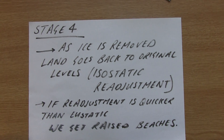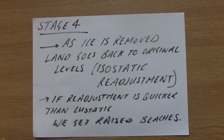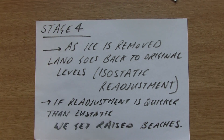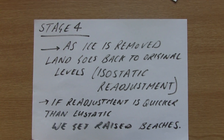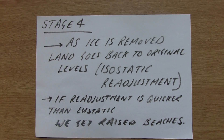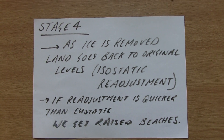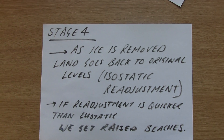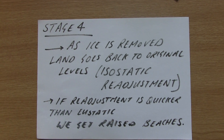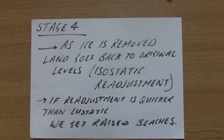Stage four: the ice is removed and the land goes back to its original levels. Once the ice has gone, the land slowly starts to rise up again — like a seesaw when a person gets off the end. We call that isostatic readjustment. If the readjustment is quicker than the eustatic change — meaning the land rises back upwards faster — we get a feature called raised beaches, which I'll explain more about in a moment.